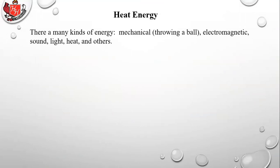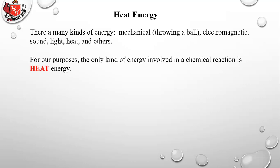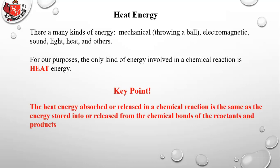There are many kinds of energy — mechanical, electromagnetic, sound, light, heat, and others — but for our purposes the only kind involved in a chemical reaction is heat energy. Other types exist, like phospholuminescence (light energy in glow sticks), but for this unit we're only interested in heat energy. The key point: the heat energy absorbed or released in a chemical reaction equals the energy stored in or released from the chemical bonds of the reactants and products. By measuring heat, we can determine how much energy is in those tiny chemical bonds.